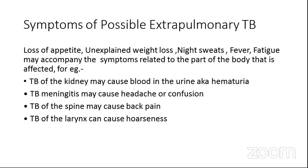Coming to extra-pulmonary tuberculosis, the same symptoms — loss of appetite, unexplained weight loss, night sweats, evening rise of temperature, and fatigue — can be accompanied by symptoms related to the affected part. For instance, in TB kidney, we can find blood in urine, known as hematuria. TB meningitis can present with headache or confusion. Spinal TB presents with back pain, and TB larynx presents with hoarseness.